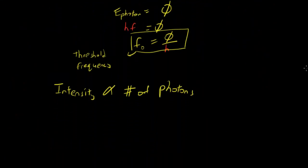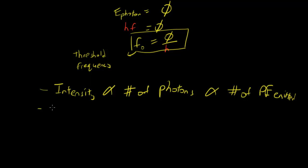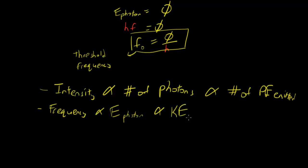Increasing the intensity increases the number of photons, and this results in an increase in the number of photoelectrons emitted. So intensity affects the number of photons and hence the number of photoelectrons emitted. Frequency affects the energy of the photon, and hence the kinetic energy of the photoelectron.